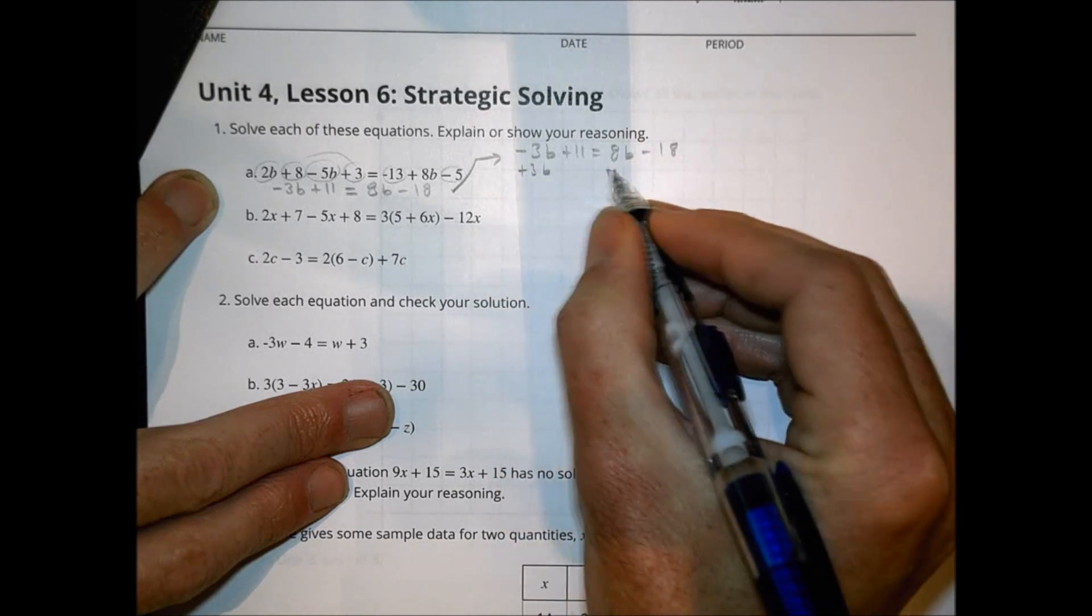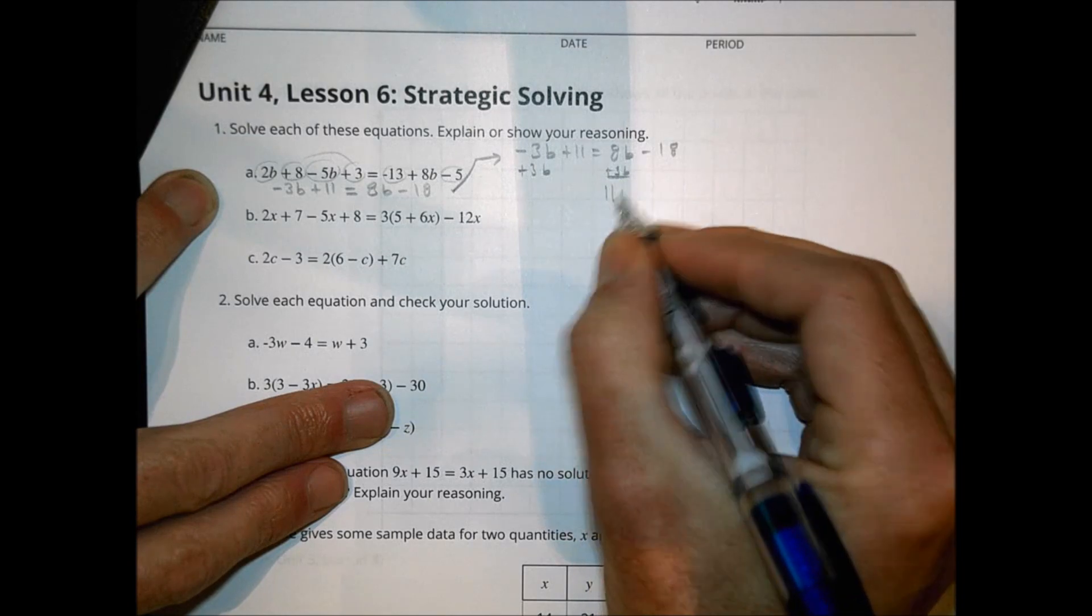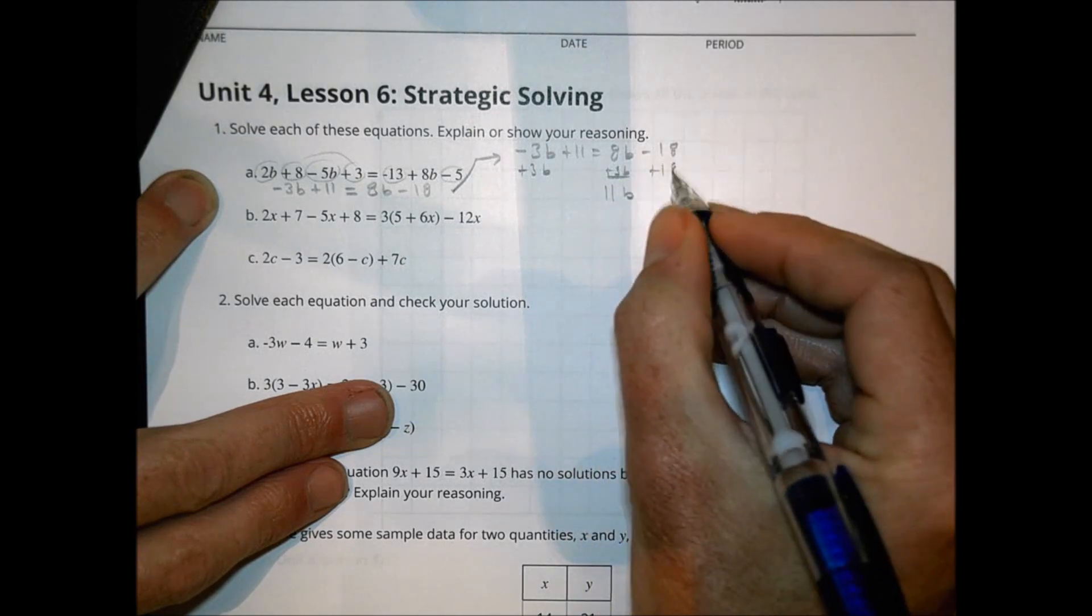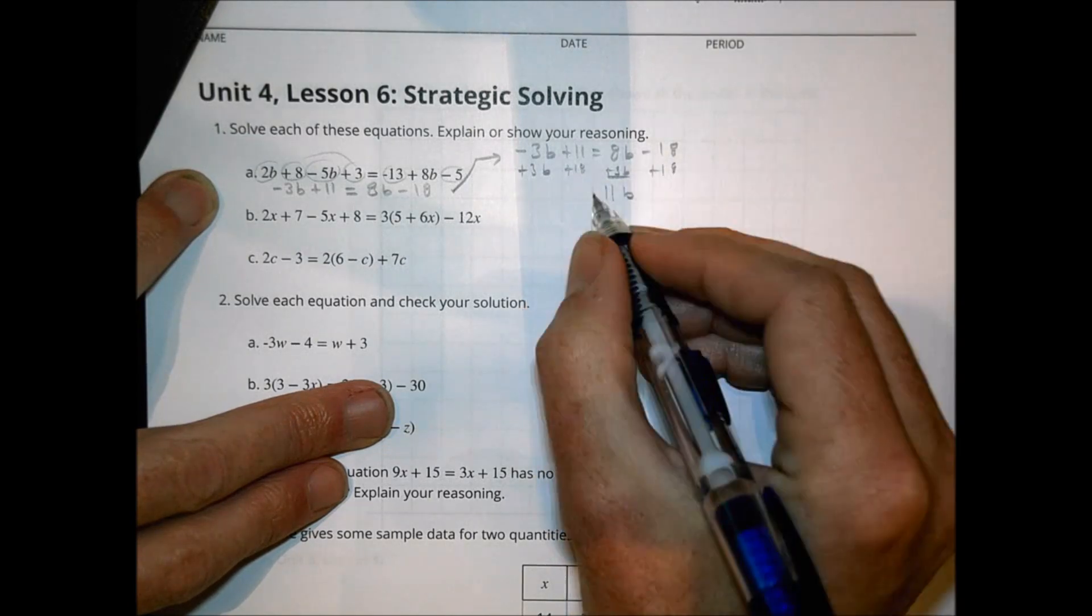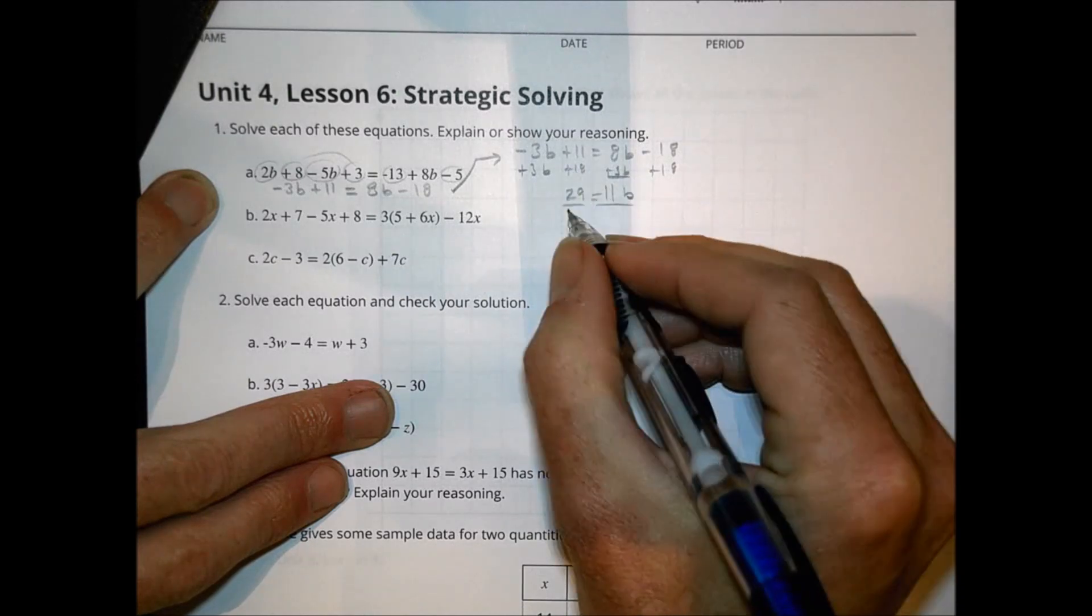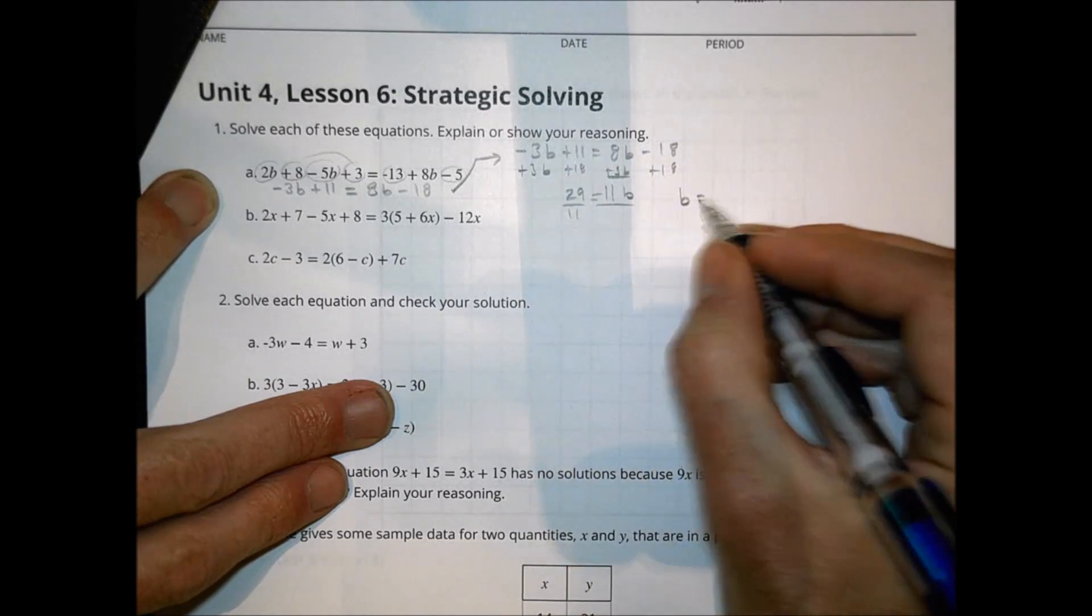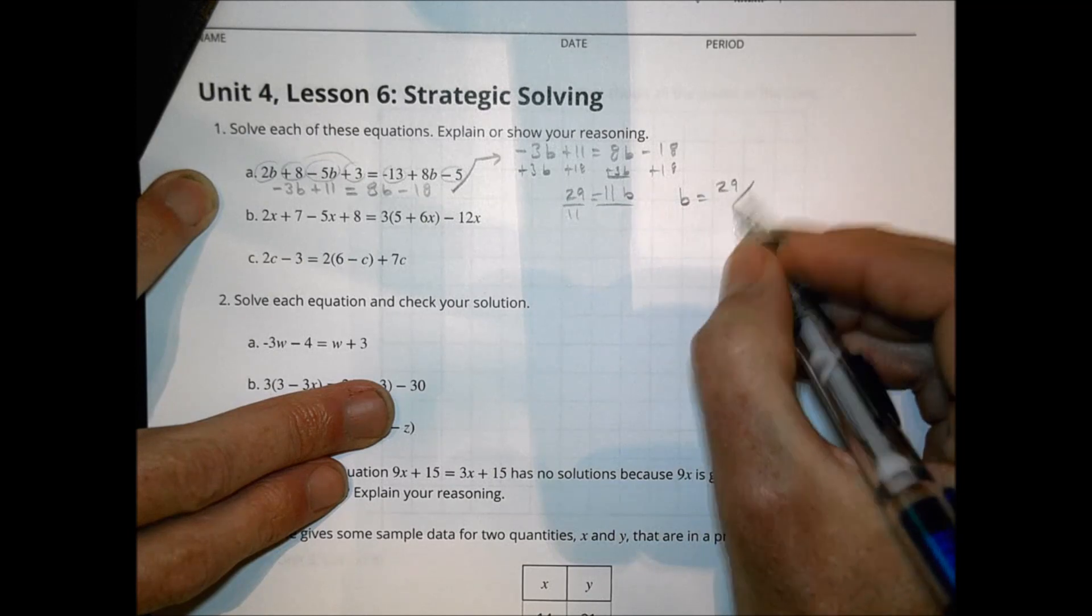I'm going to go ahead and add 3B to both sides. So I have 11B. And let's get the 18 on the other side. Add 18 over there. And that equals 29. I divide both sides by 11. So that B equals simply 29 over 11.